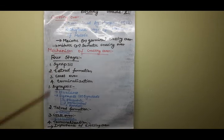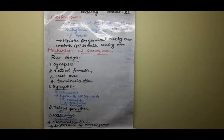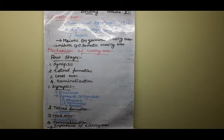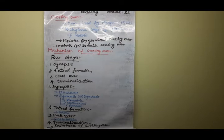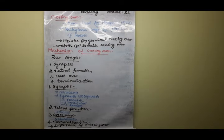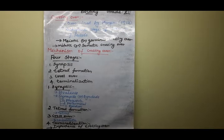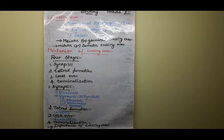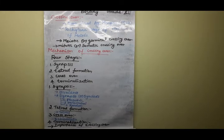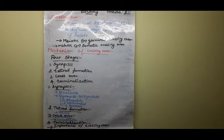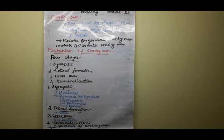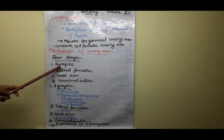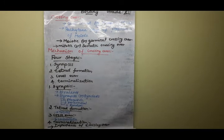The first stage is synapsis. These terms you have completed in 11th standard — let us revise. Synapsis means the homologous chromosomes align side by side, and a pairing formation is present. The pairing of homologous chromosomes is called a bivalent. This pairing process is called synapsis or synapsis.